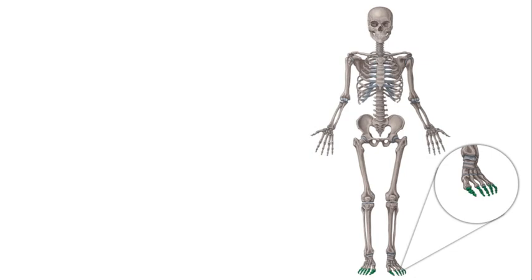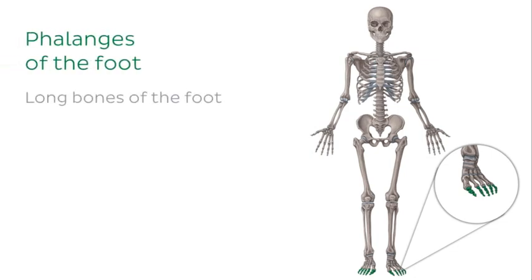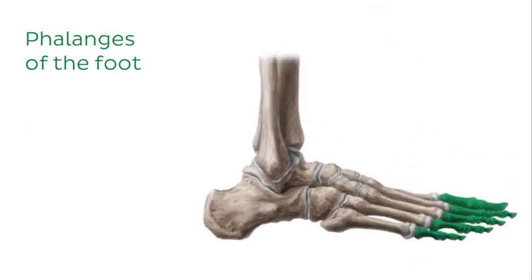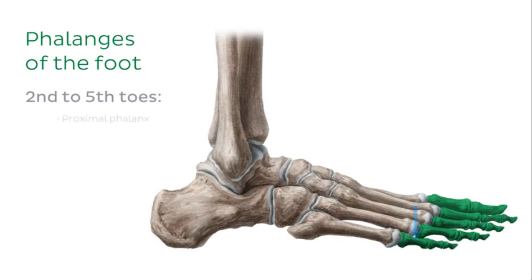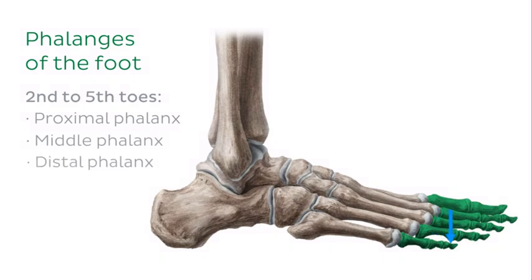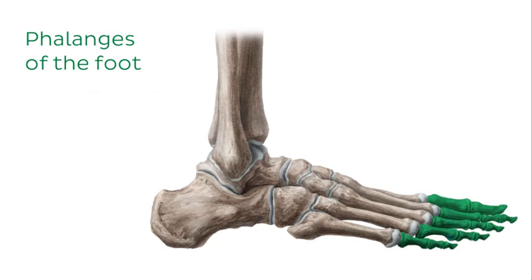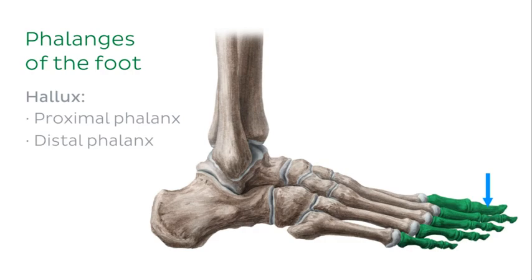The final bones of the lower limb are the phalanges of the foot, situated distal to the metatarsals, making up the bones of the toes. Each toe is comprised of three phalanges — a proximal, middle and distal phalanx — with the exception of the big toe, which is comprised of only two: a proximal phalanx and a distal phalanx. The phalanges are connected to each other via interphalangeal joints. The second to fifth toes each form two interphalangeal joints, while the big toe, or hallux, only forms one.